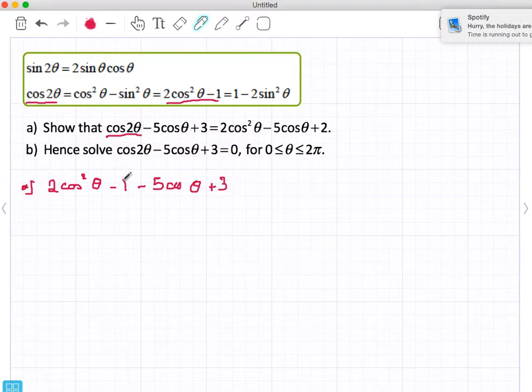Now if you look at this, I've got 2 cos² θ, yes. I've got the minus 5 cos θ, yes. I've got minus 1 and plus 3 giving me plus 2.